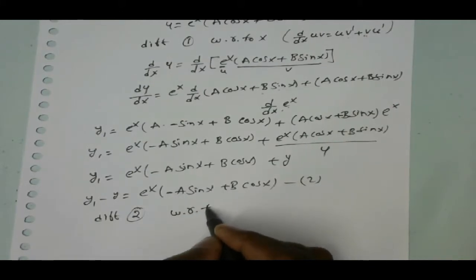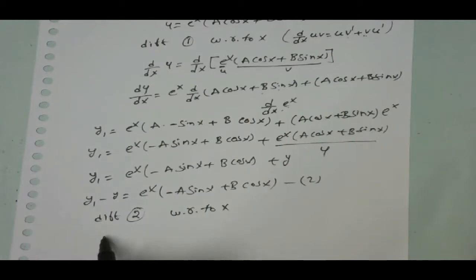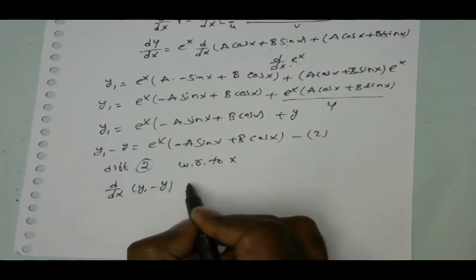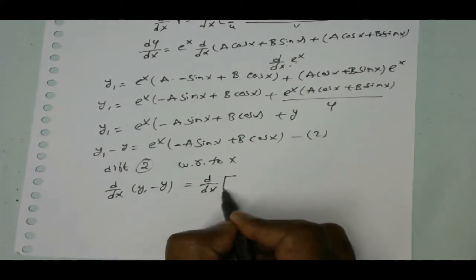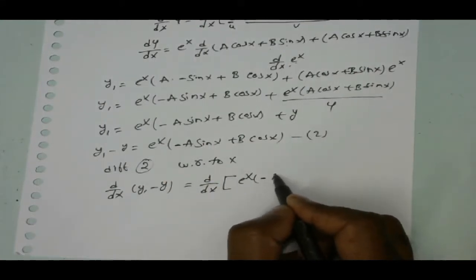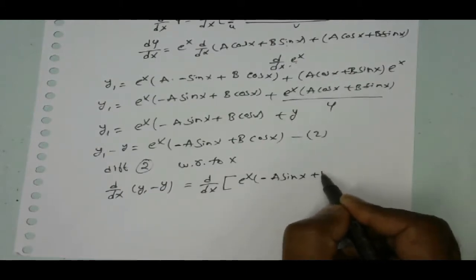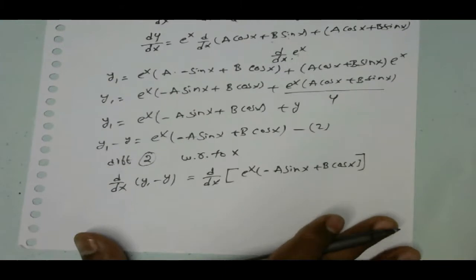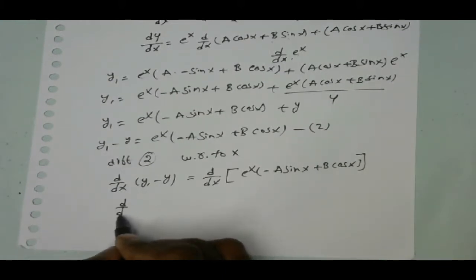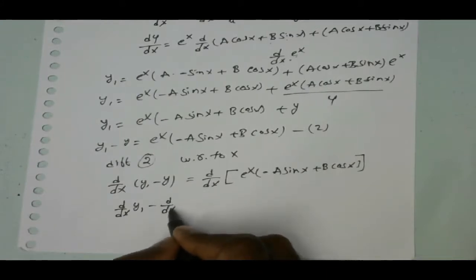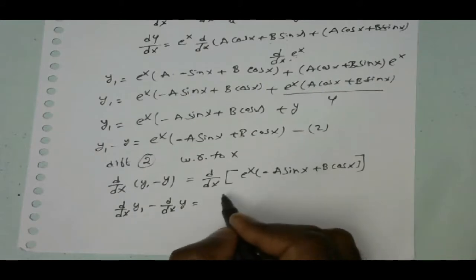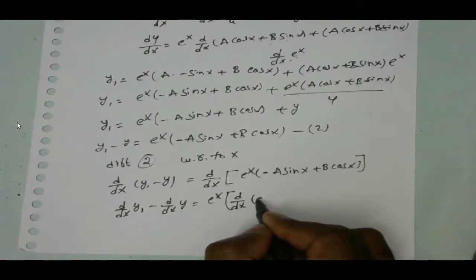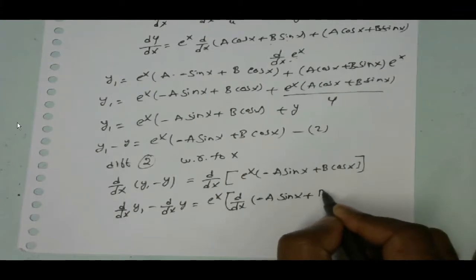Differentiating equation 2 with respect to x: d by dx of y₁ minus y is equal to d by dx of e power x of minus a sin x plus b cos x. So d by dx of y₁ minus d by dx of y equals — applying the uv formula: e power x into d by dx of minus a sin x plus b cos x.